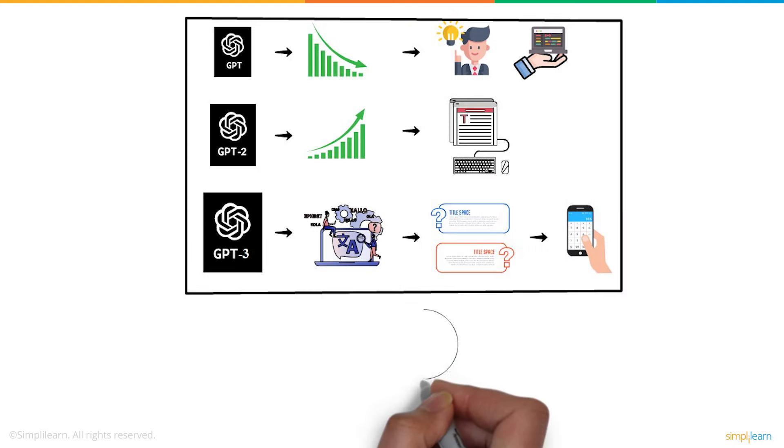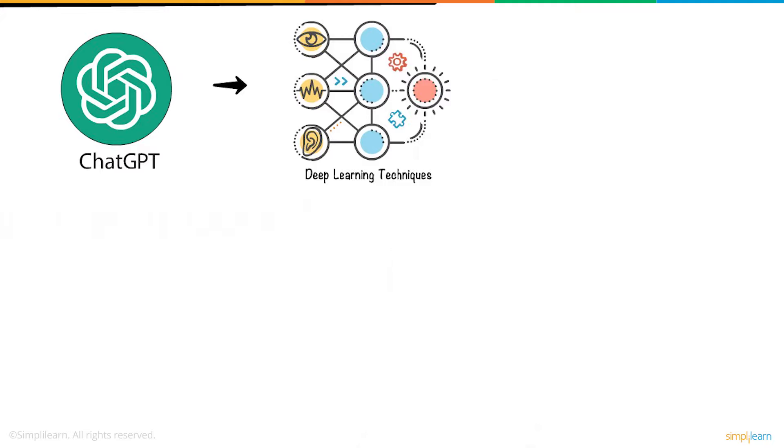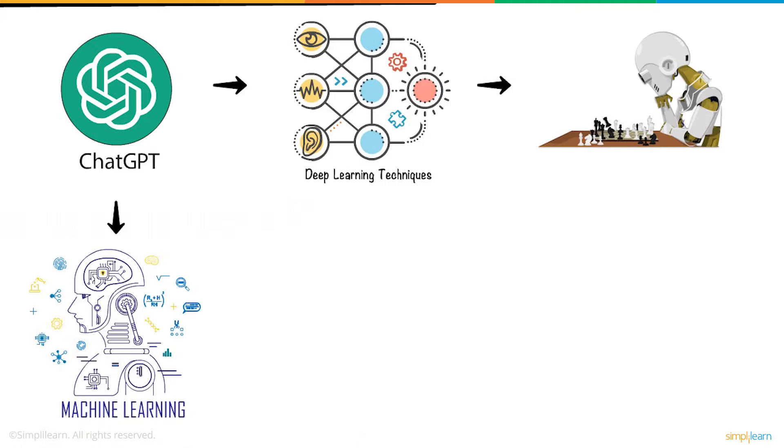But ChatGPT stands tall compared to all other achievements of OpenAI. So, how does it work? ChatGPT uses deep learning techniques to generate human-like text. It is based on the machine learning model derived from the class called the Large Language Model.